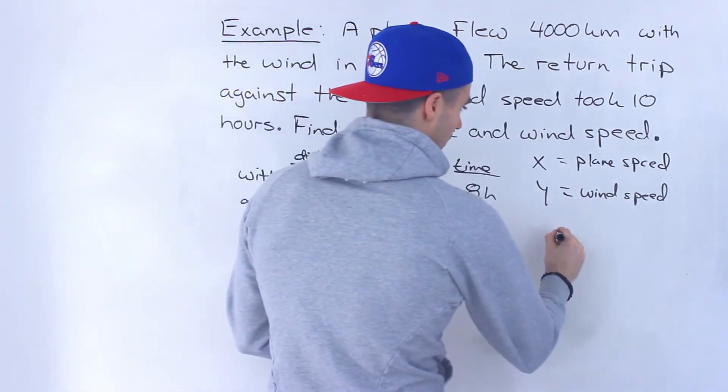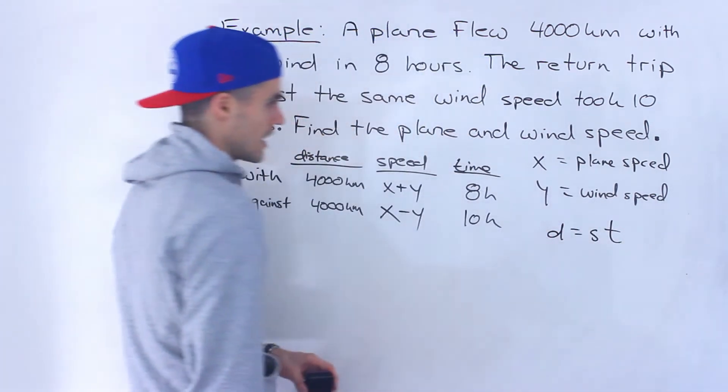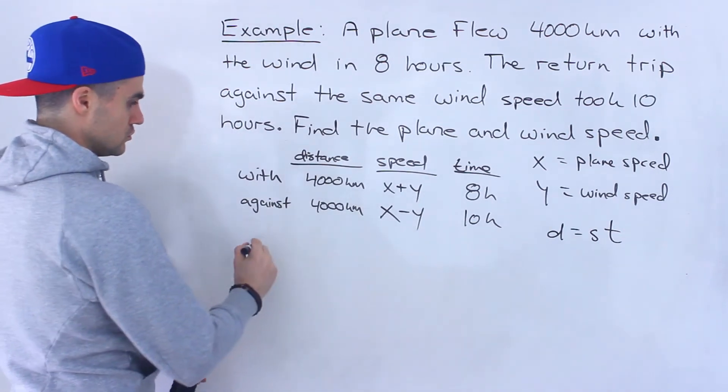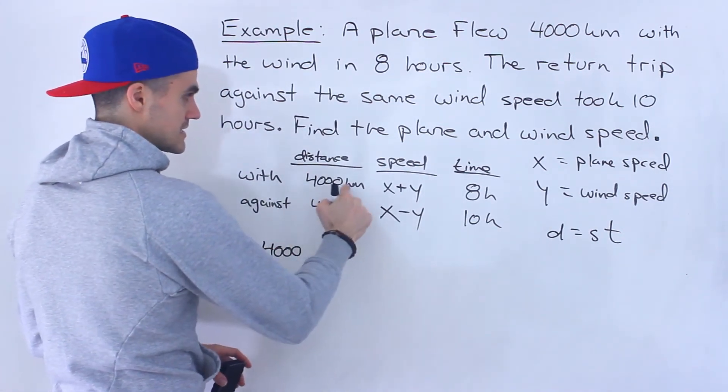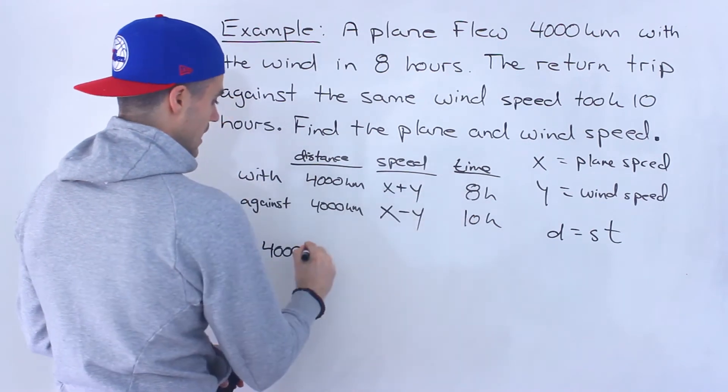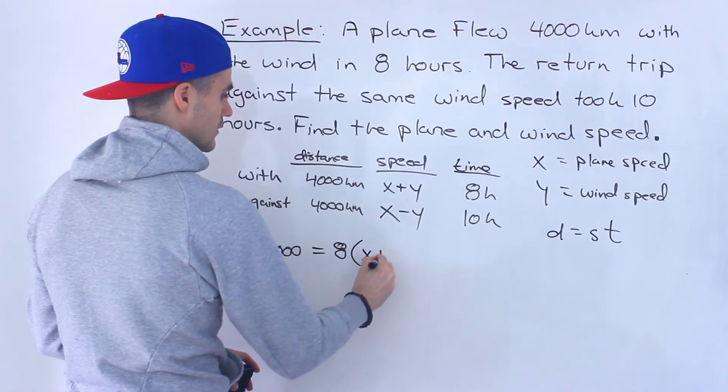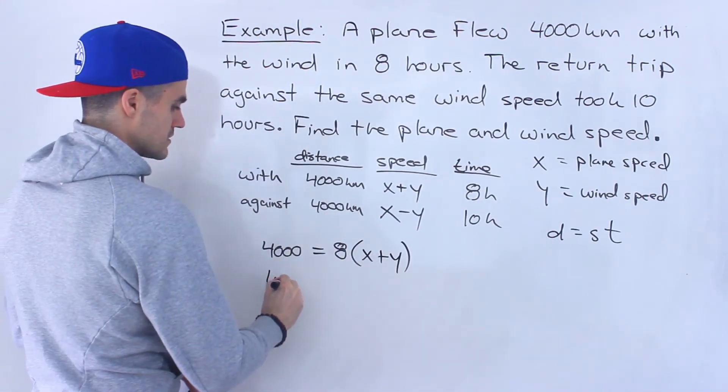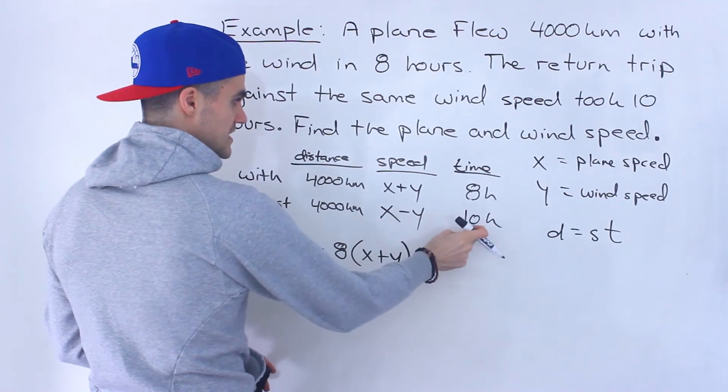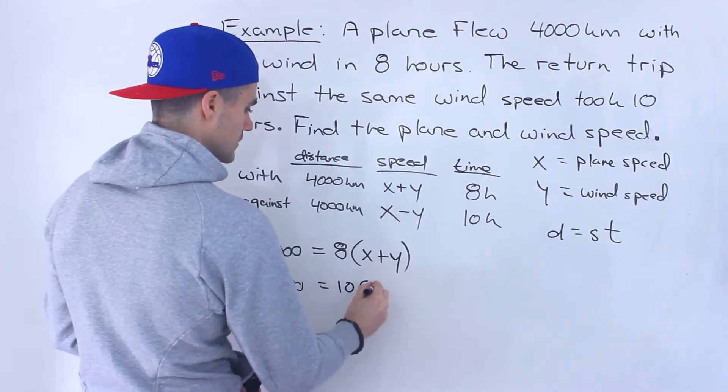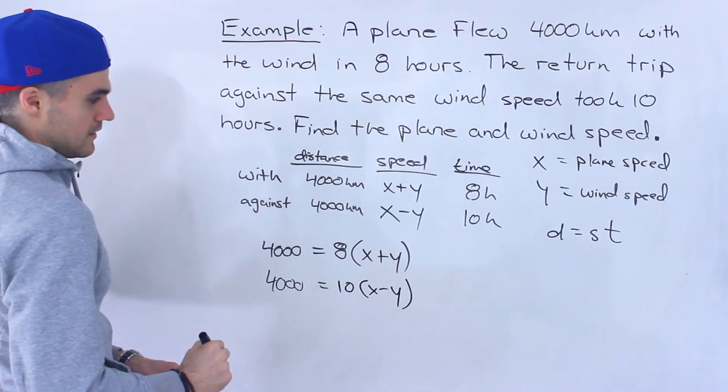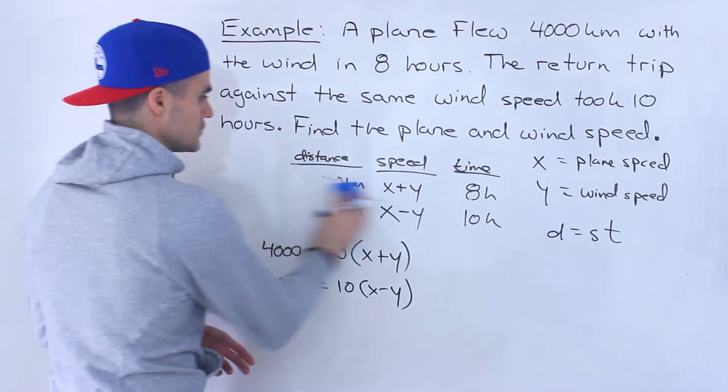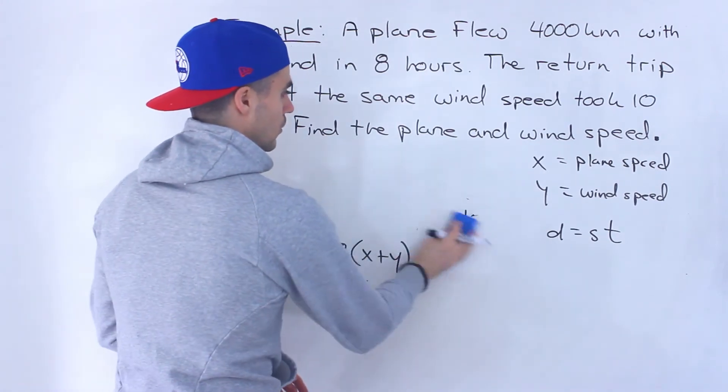And we know just in general that distance equals speed times time. So notice with that formula we can create two equations here. We could say distance equals speed times time and I'm going to put that time in front. Then over here same thing 4,000 equals speed times time but the 10 I'm going to put in front. And now notice we have two equations and then two unknowns. So we could solve using substitution or elimination.